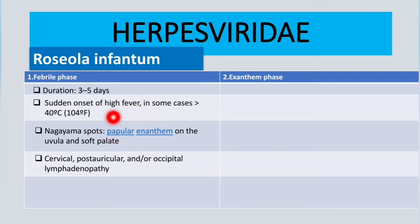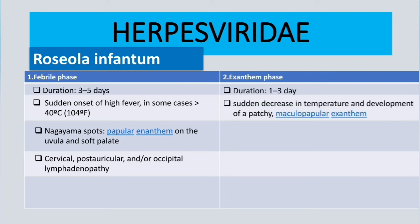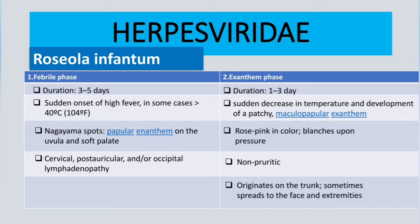After the febrile phase, we have the exanthem phase — hence the name 'exanthem subitum,' meaning a sudden rash. The exanthem phase lasts one to three days. Its main feature is a sudden decrease in temperature along with development of a patchy maculopapular exanthem. This rash is rose-pink in color and blanches upon pressure, and it is non-pruritic.